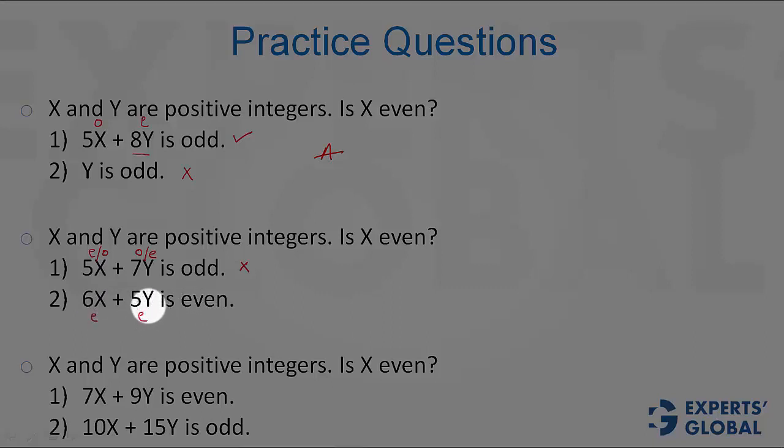So this gives us some good information that 5Y is even, and therefore Y is even, but this doesn't tell us much about X. So even this is not sufficient.